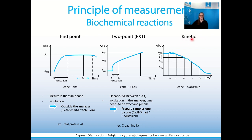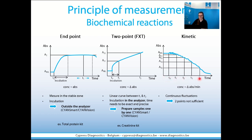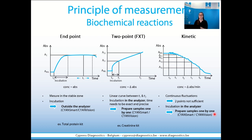The third type of biochemical reaction is the kinetic ones. Kinetic reactions are characterized by continuous fluctuations in absorbance. You need to measure at different time points — it is not enough to measure the absorbance of your mixture only at two points. This also means that the incubation needs to take place inside the analyzer and you need to prepare samples one by one. For example, this is true for our GOT and GPT kits.